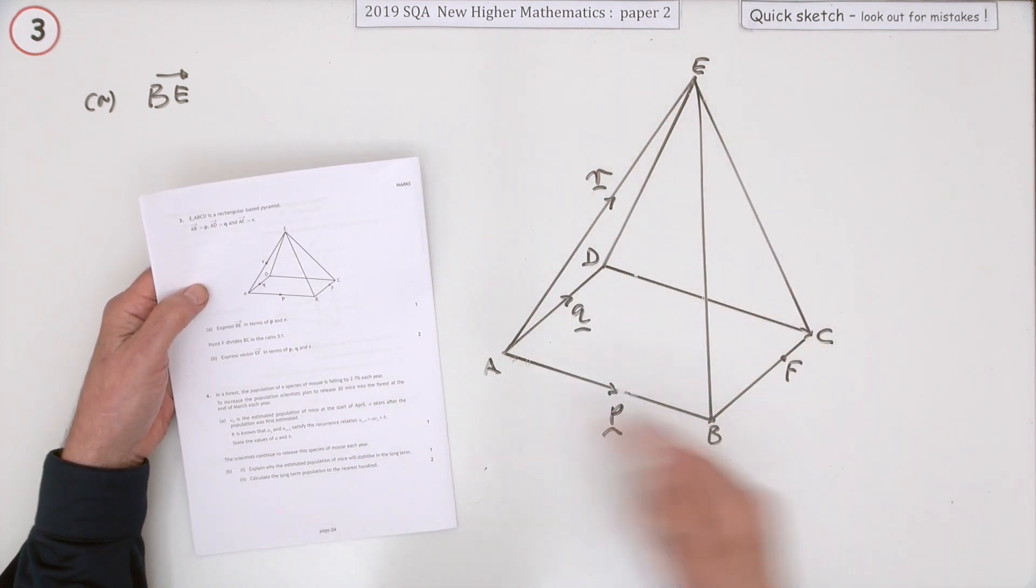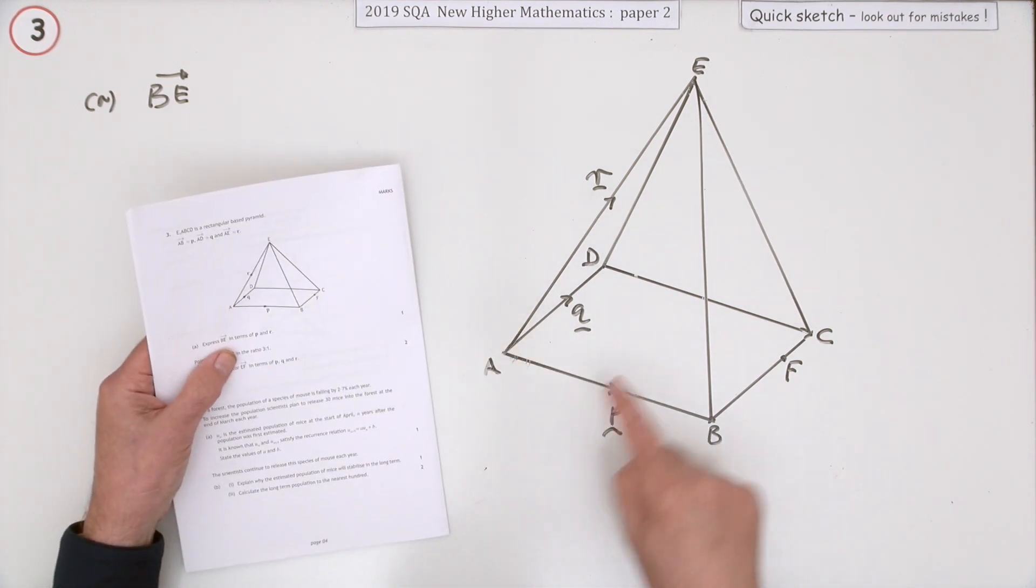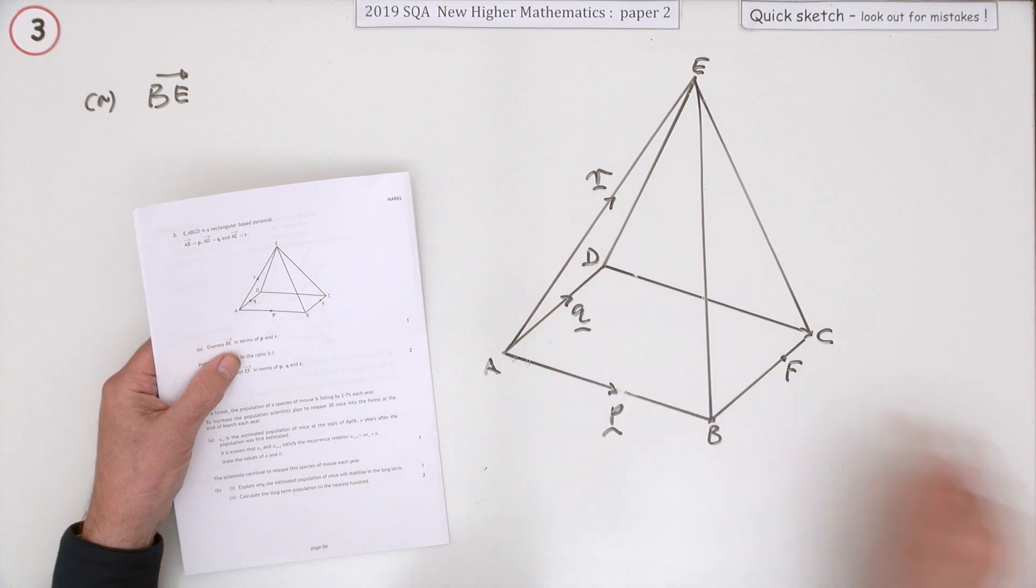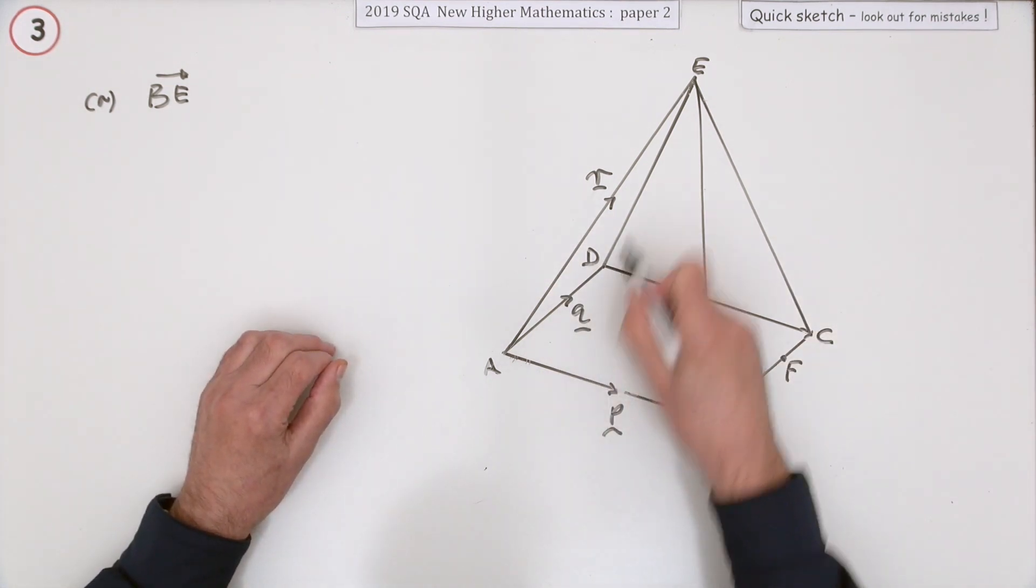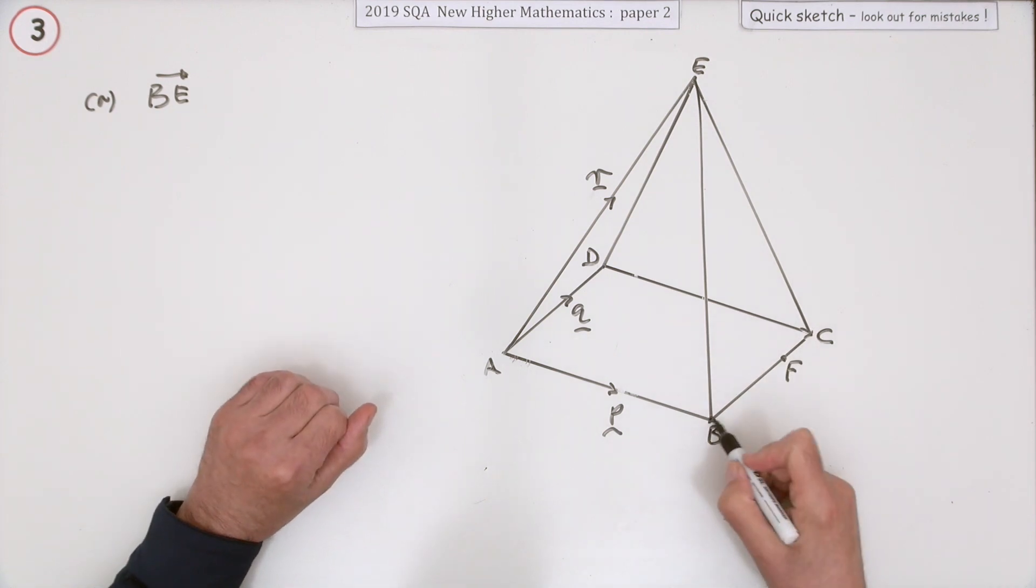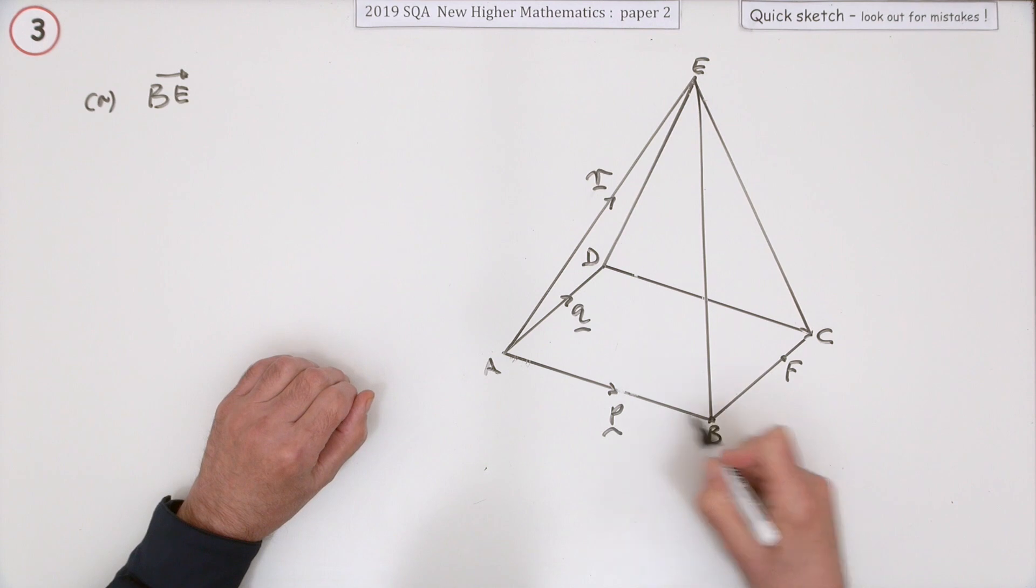First of all, it says express BE in terms of P and R. Well, if you were restricted to crawl along that framework, one way to get from B to E would be to go from B to A.